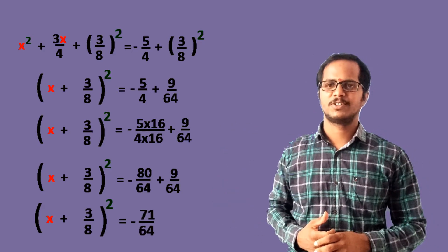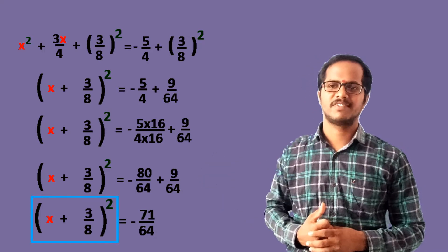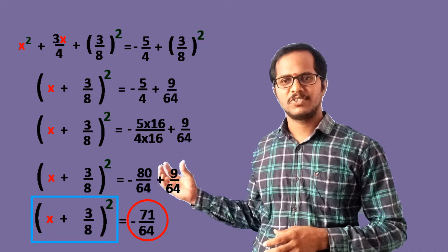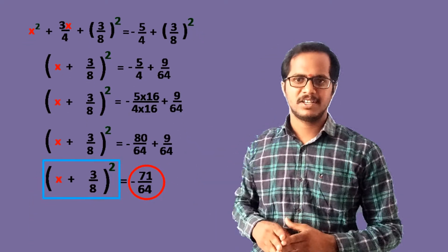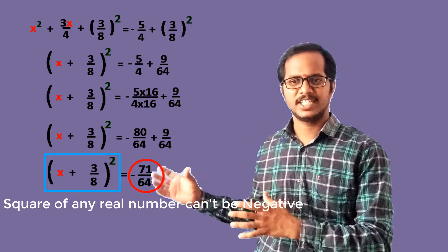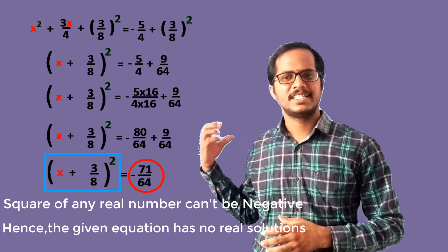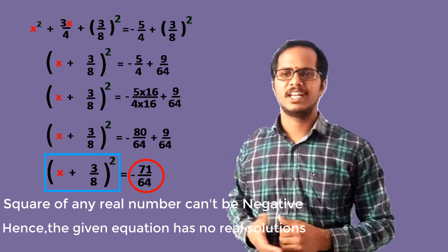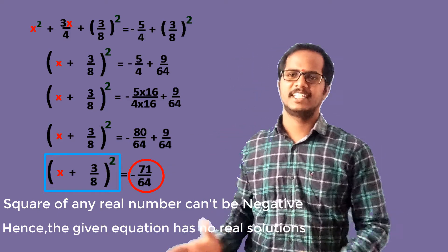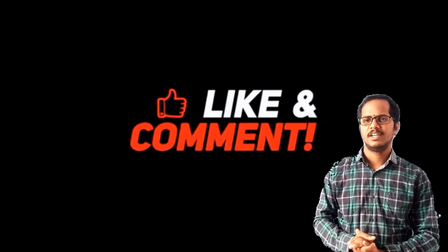So we get (x + 3/8)² = −71/64. On the left-hand side we have a perfect square and on the right-hand side we have a negative number. The square of any real number cannot be negative, but here we get the square equal to a negative number, which is not possible. Hence, there are no real solutions for x. The given quadratic equation has no real solutions. This is the solution for example seven. We will meet in our next video with the next problems. Till then, bye, thank you.